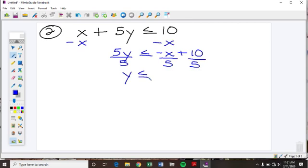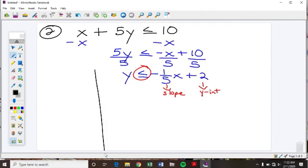It's y is less than or equal to... Now, what's my slope on this one? Very good. Negative 1 fifth x plus 2. So here's my slope. Here's my y-intercept. Remember, we usually use the letters M and B for that. And this time we're going to use a solid line because it's less than or equal to.